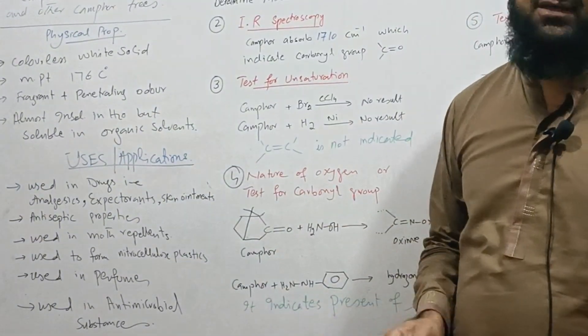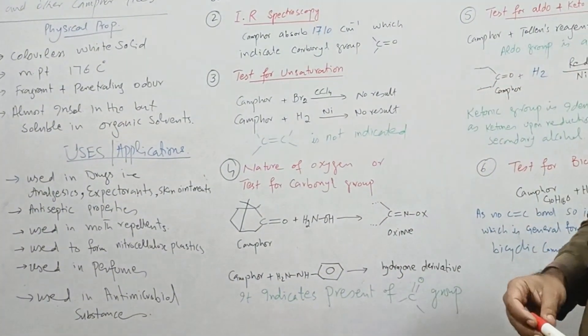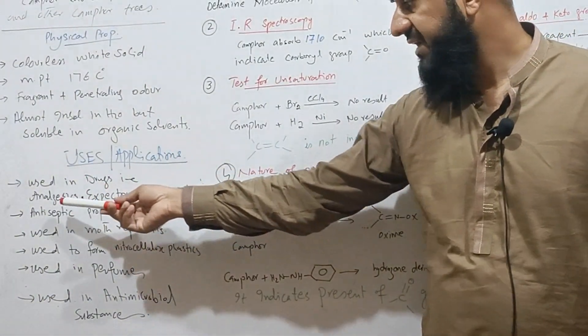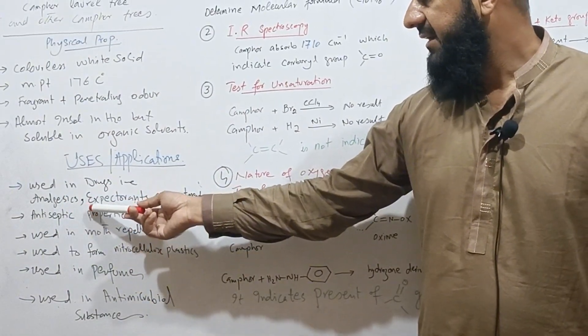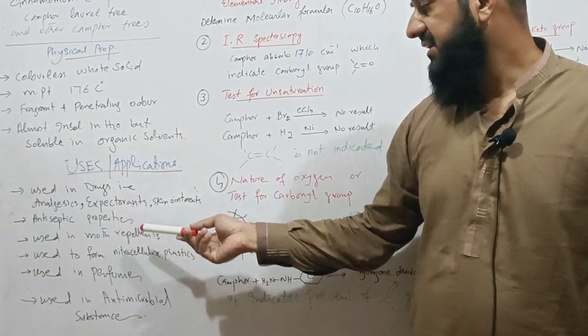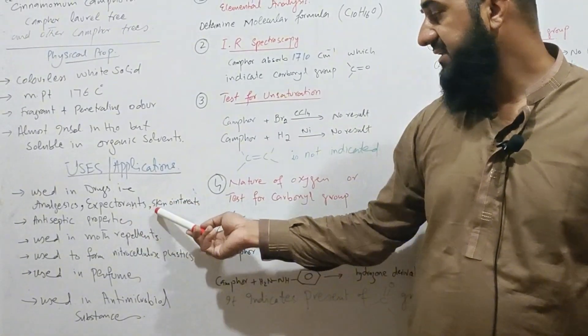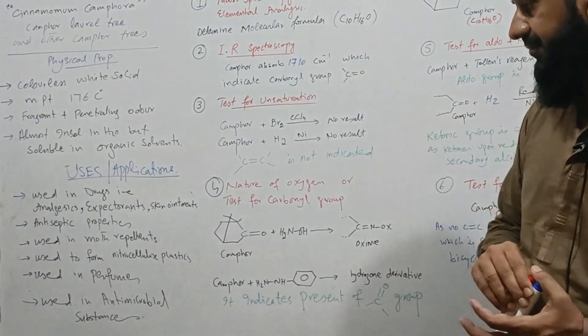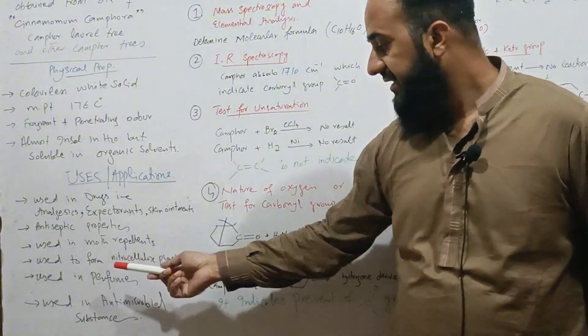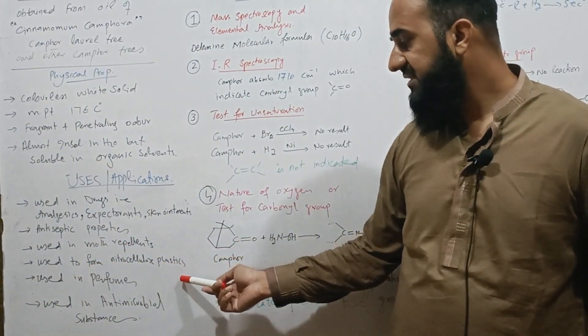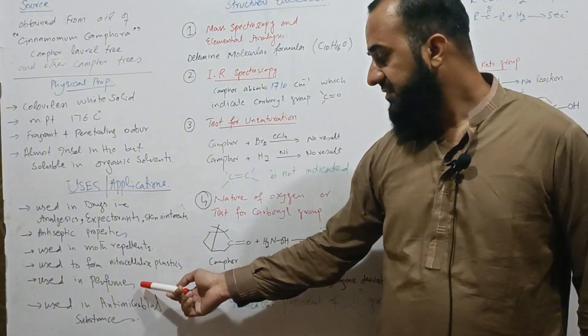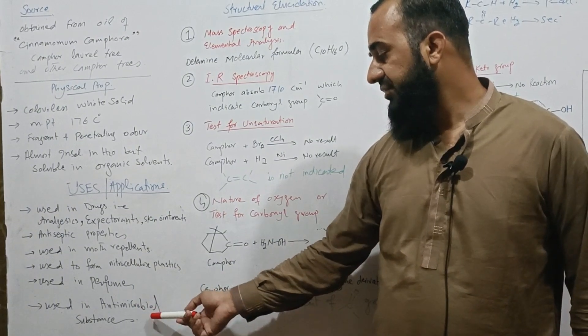If we see the uses or application, it is used in drugs because of its analgesic action and used in expectorants as it removes the congestion of the lungs. It is also used in skin ointments and moth repellents. It is also used to form nitrocellulose plastic. Due to its fragrance it is also used in perfumes and also used in antimicrobial substances.